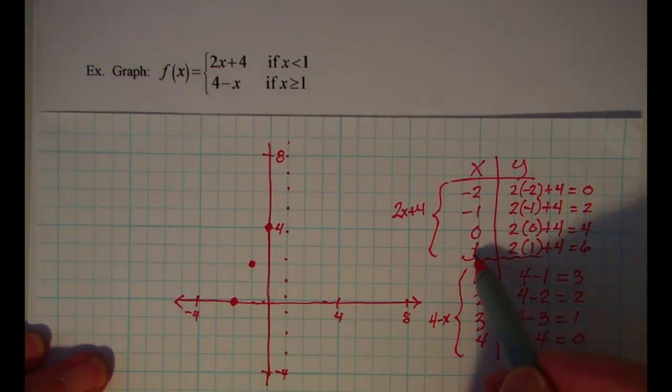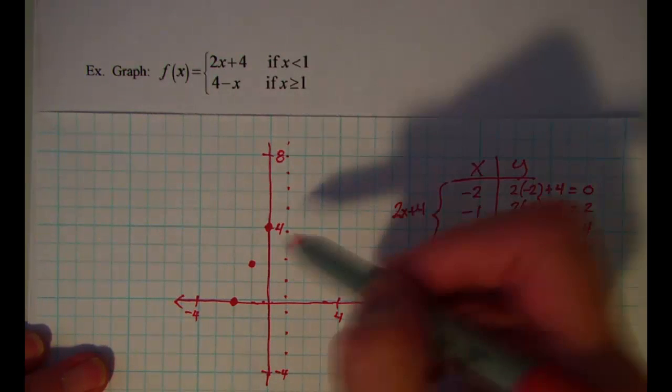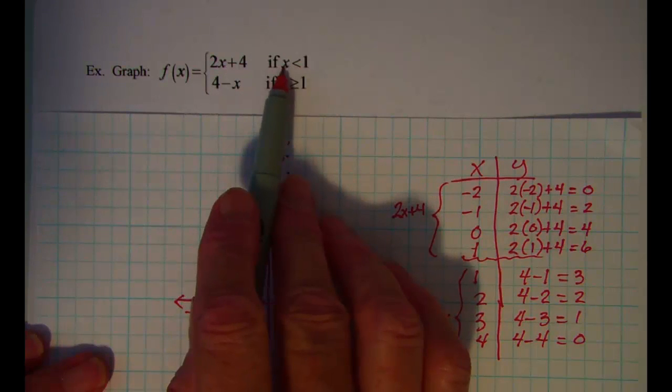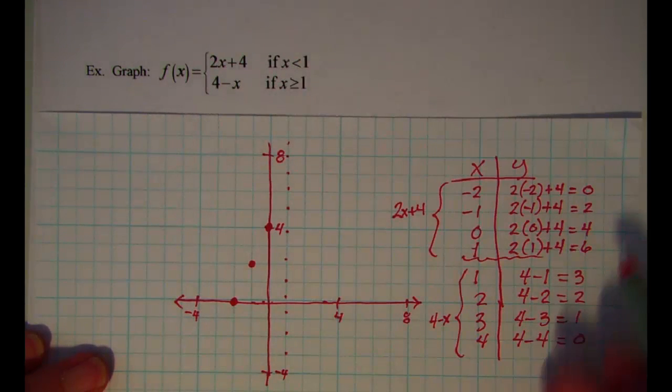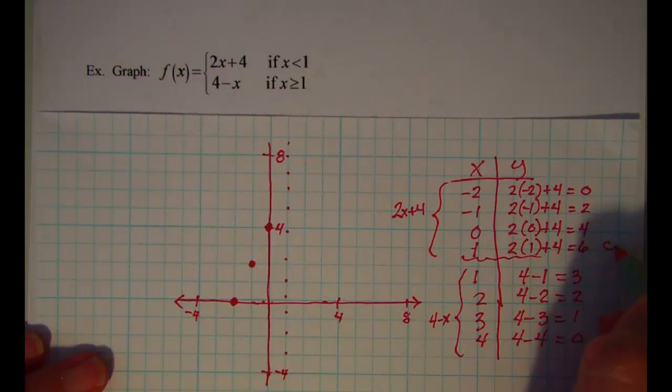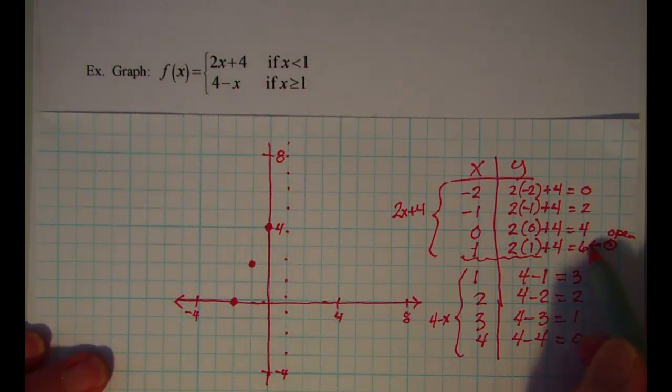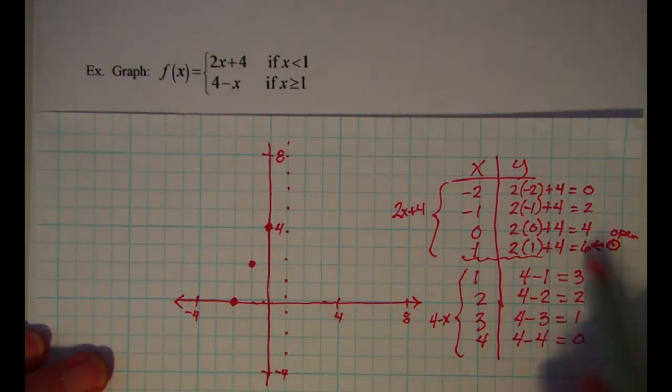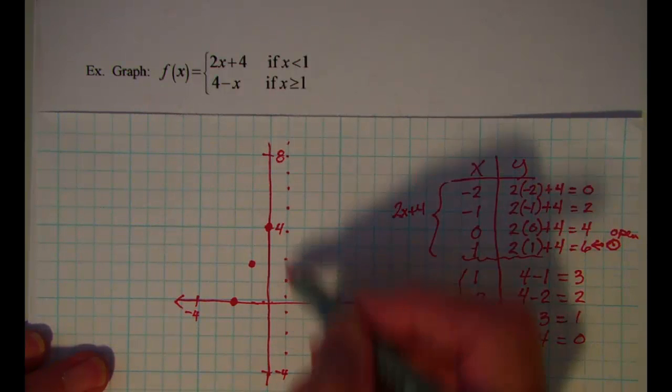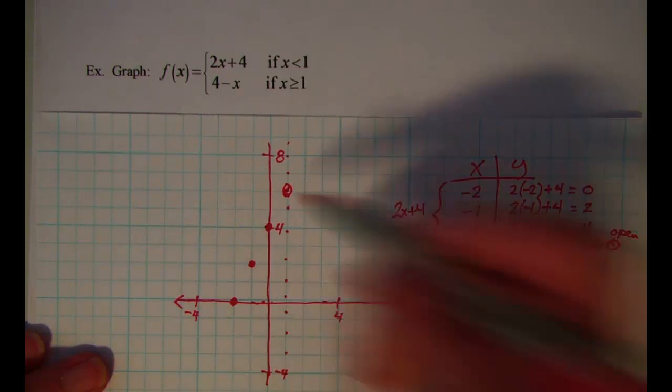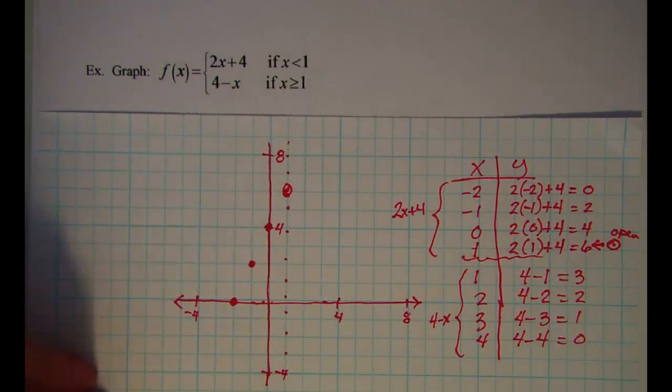And when x is 1, y is 6. But on that top rule it's for x's that are less than 1, so I have to put an open circle at this point. So when x is 1, y is 6, I have an open circle there, meaning that I don't include that point in my graph.